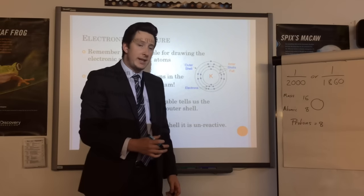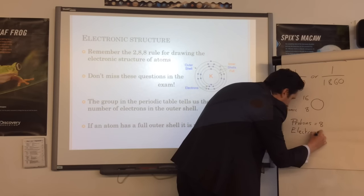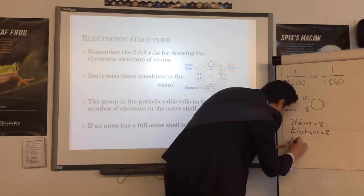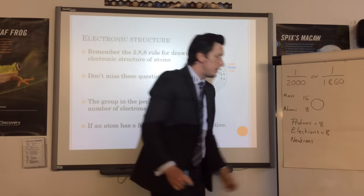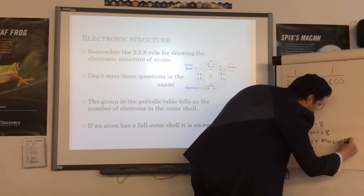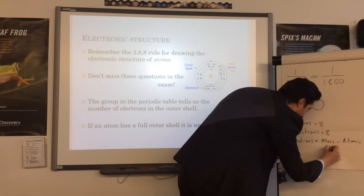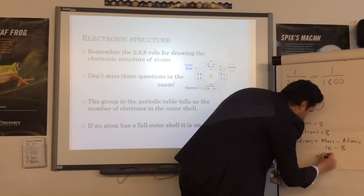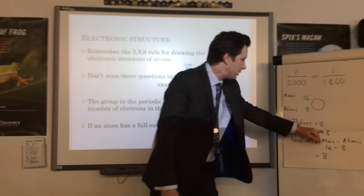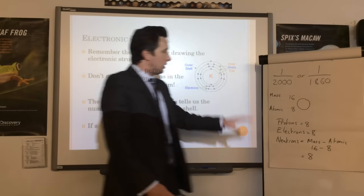For atoms, they always have the same number of protons as electrons because they cancel each other out and make the atom neutral, so oxygen also has eight electrons. The only tricky part is working out the number of neutrons. To do that, you do mass number minus atomic number: 16 minus 8 equals 8 neutrons. Be aware the number of neutrons is not always the same as the number of protons and electrons.